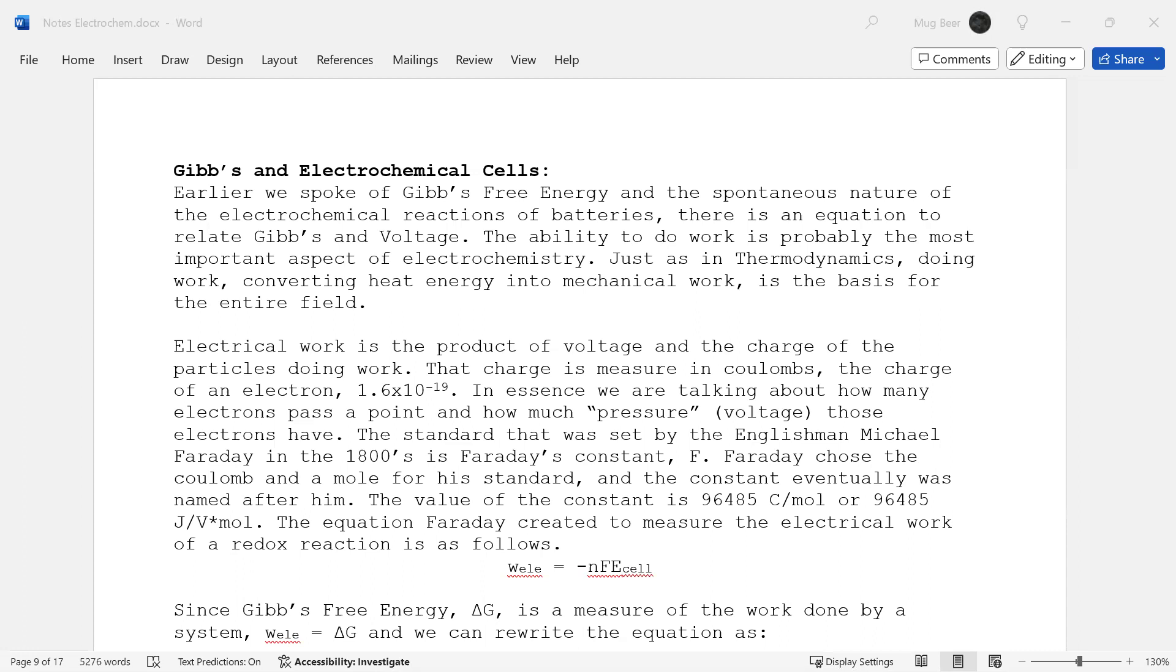So if we're doing work, I just need to move something or I need to heat something. Those are my two options. So when we as humans were trying to figure out how to utilize electricity, the person who was the godfather of all this electrochemical stuff is Michael Faraday. He was sometime in the 1800s and he came up with something that became named Faraday's constant. And what that is, is he chose coulombs and moles for his standards. And so after he passed away, they named the constant after him.